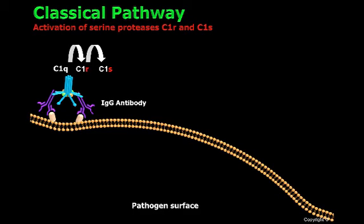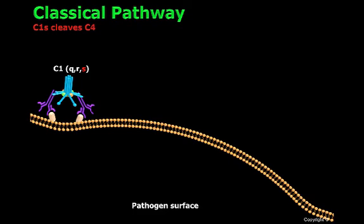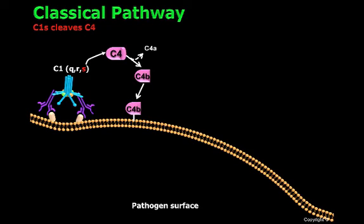Activated C1S will then perform an important function: C1S will cleave another component of the complement system called C4, generating C4a and C4b. When C4b is close enough to the surface, it will bind covalently and attach to the surface of the pathogen. This is what we call C4b deposition.